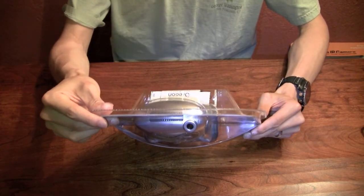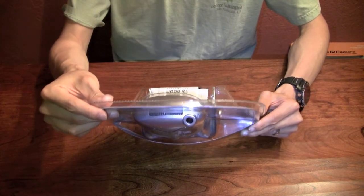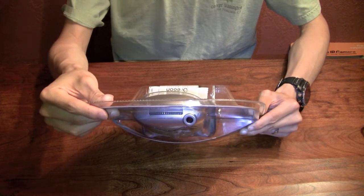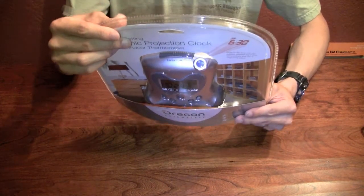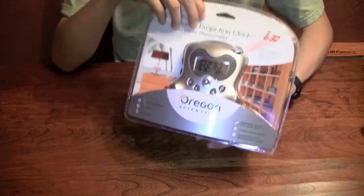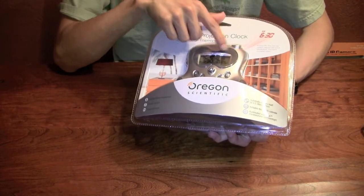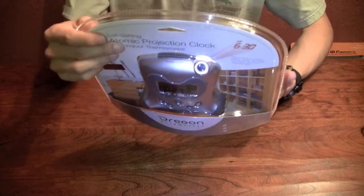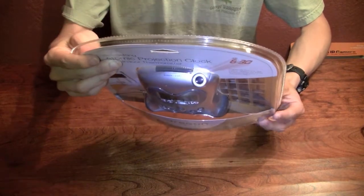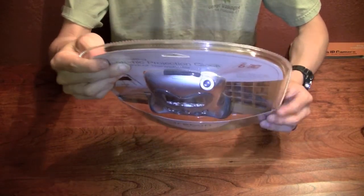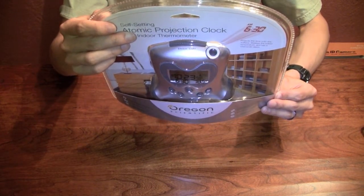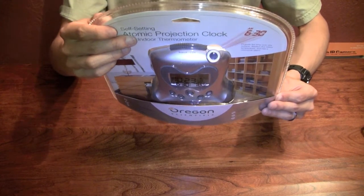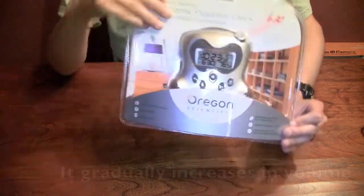On the back it says the self-setting atomic projection clock with built-in thermometer. So it sets time by itself. It also has date and calendar features and shows a US map with different time zones. It comes with two AA batteries and an AC adapter. Indoor temperature range from 23 degrees Fahrenheit to 122 degrees Fahrenheit, and it has an alarm.